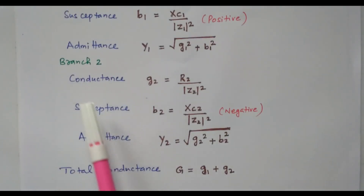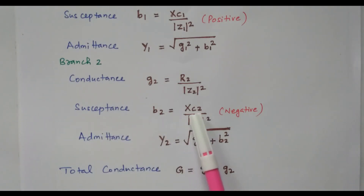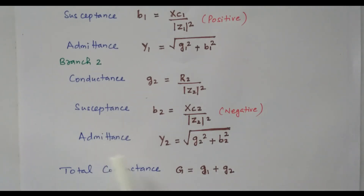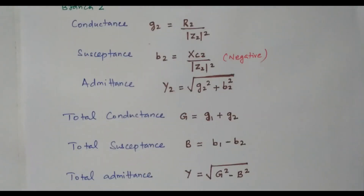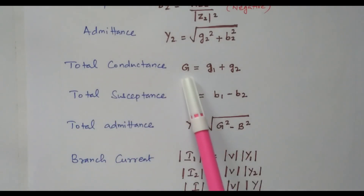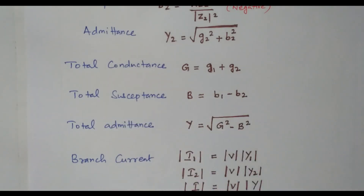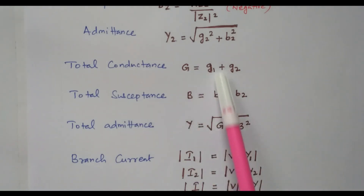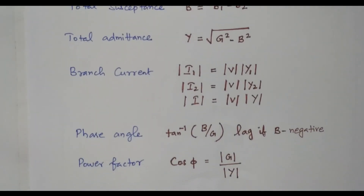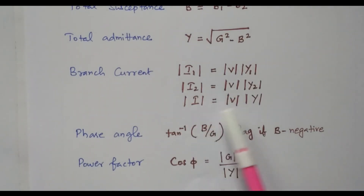Similarly, for branch 2, conductance G2 equals R2 divided by Z2 squared. Susceptance B2 equals XL2 divided by Z2 squared, and it is negative because of inductance. Admittance Y2 is the square root of G2 squared plus B2 squared. The total conductance G equals G1 plus G2. Total susceptance B equals B1 minus B2. Total admittance Y equals the square root of G squared plus B squared. Branch currents are I1 equal to V times Y1, I2 equal to V times Y2, and total current I equals V times Y.